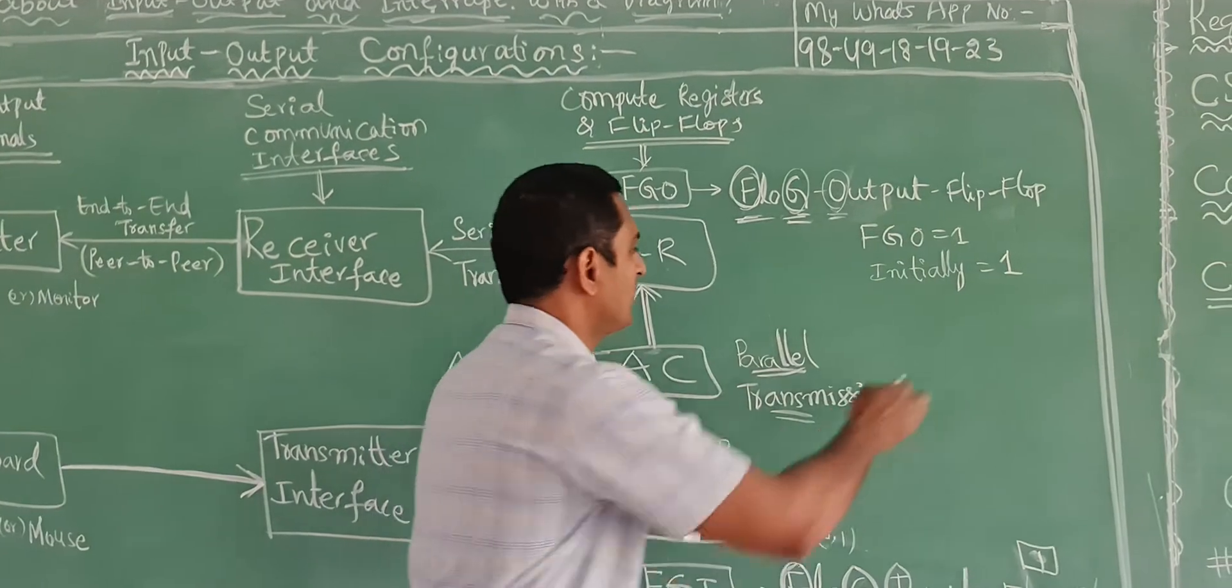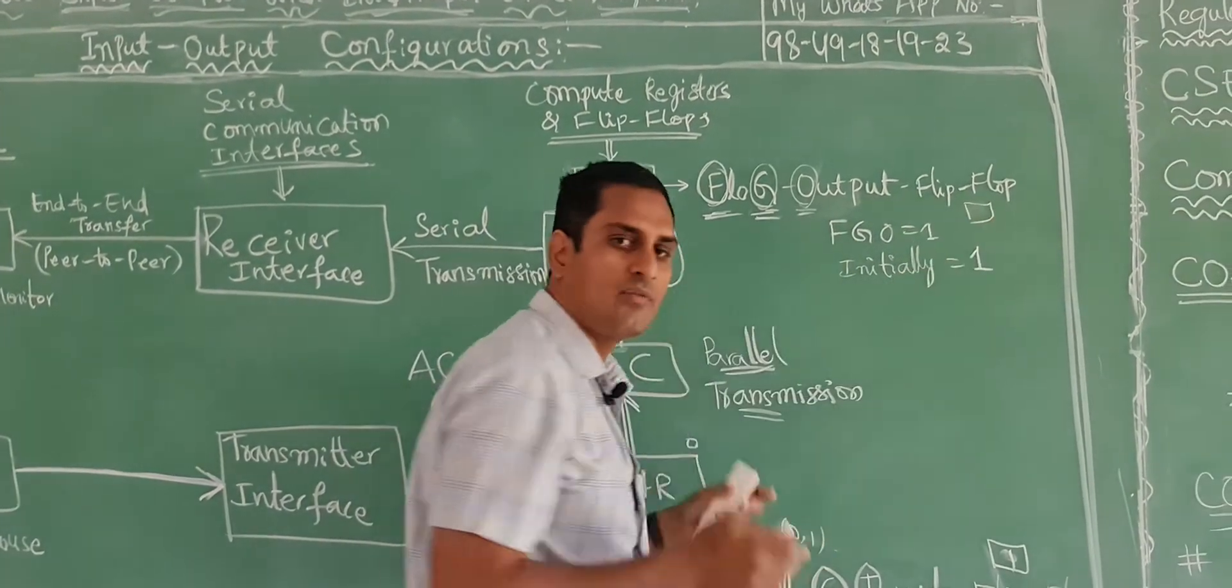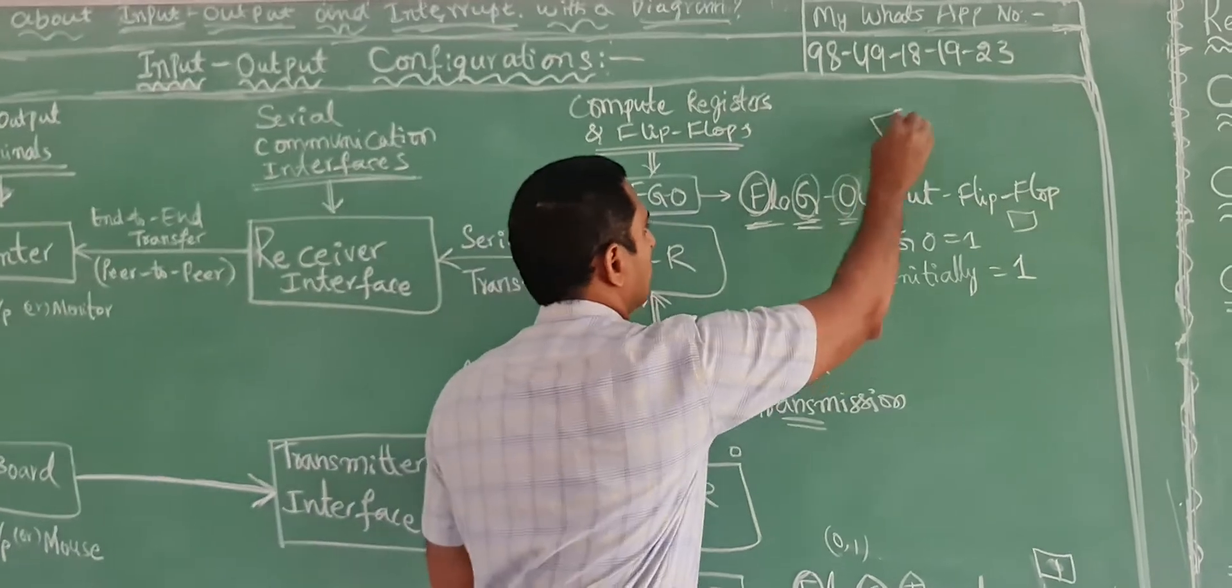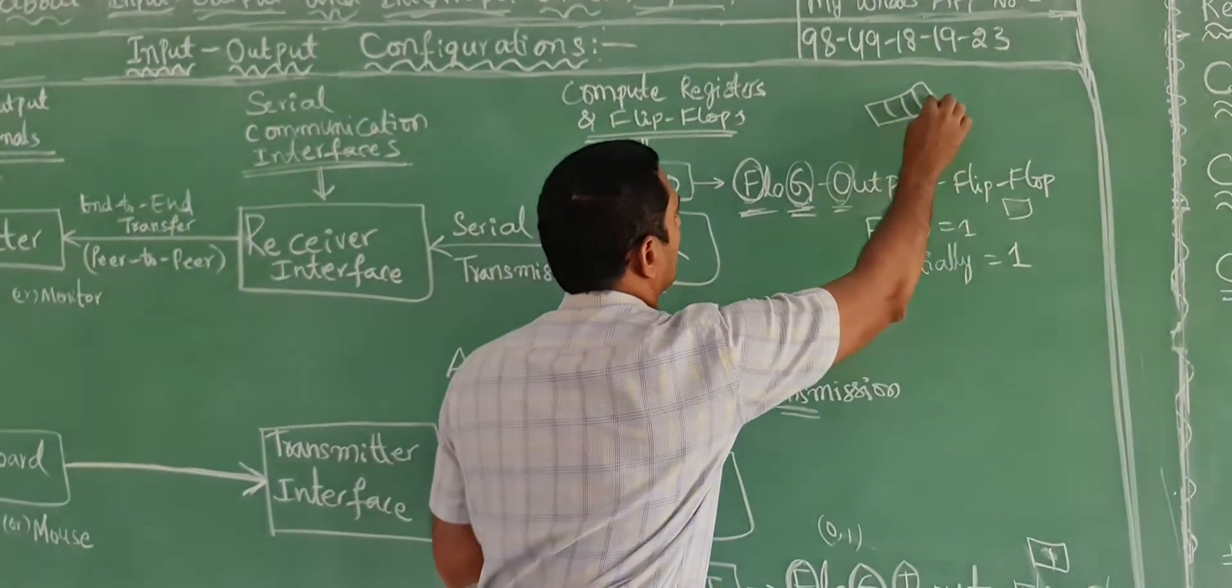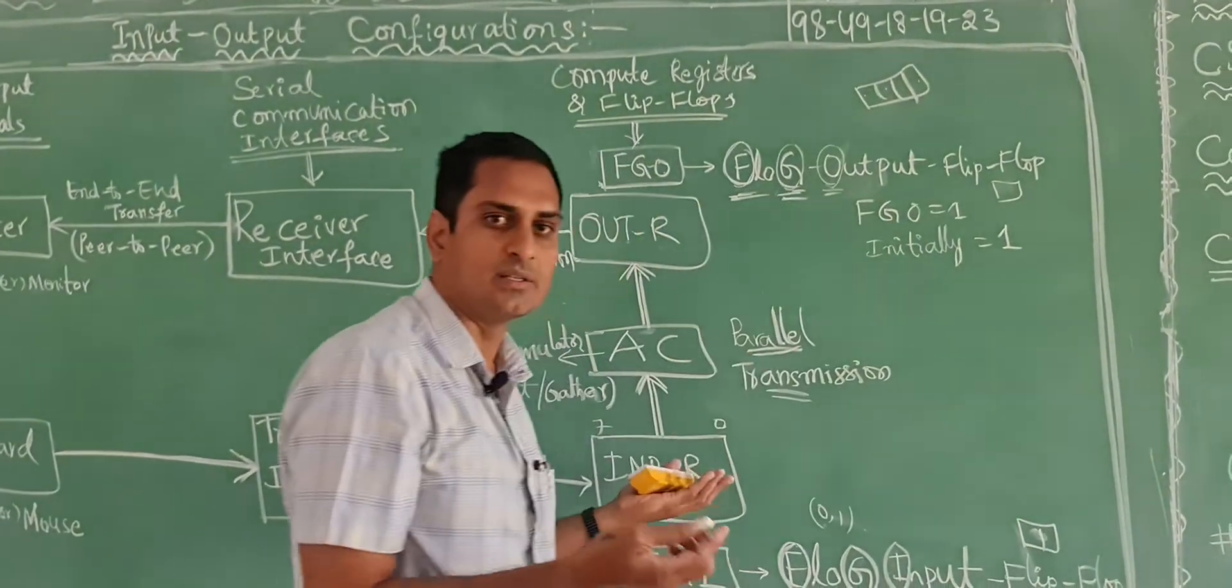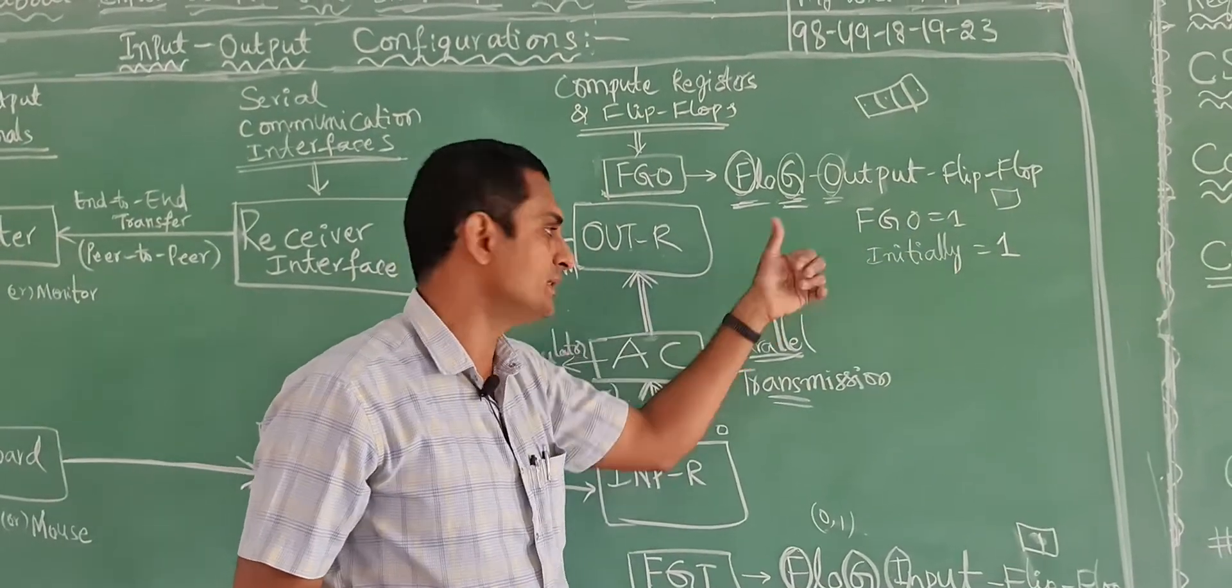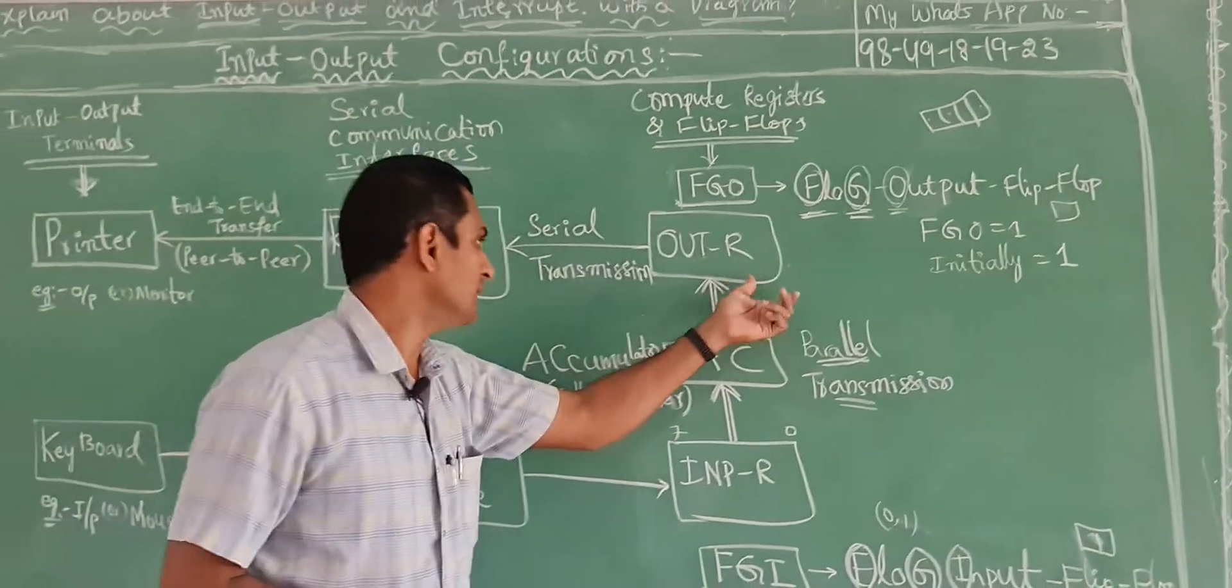It is again a flip flop. Flip flop means a small cell. Collection of flip flops is a register, 4-bit register, 8-bit register, 4 flip flops. If it is 1, it will be in active state. If it is 0, it is in deactive state.